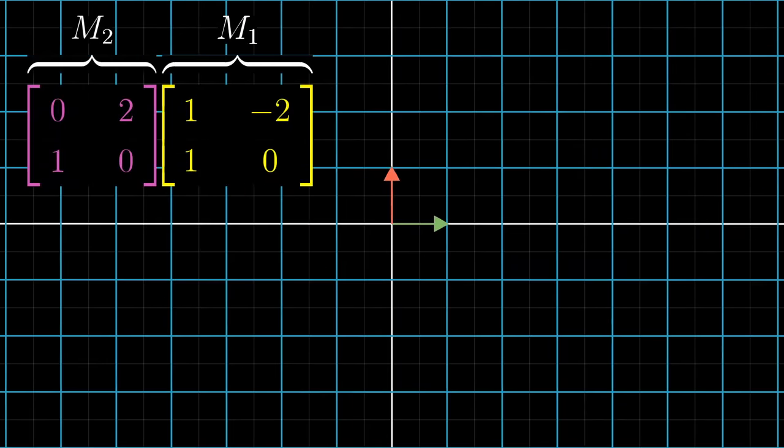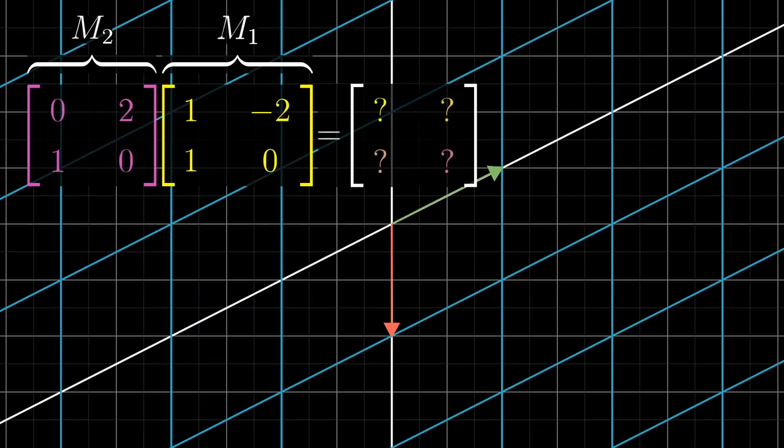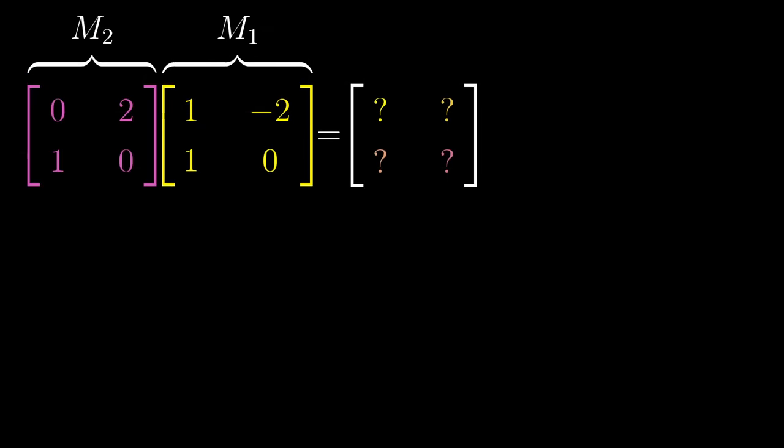The total effect of applying M1 then M2 gives us a new transformation, so let's find its matrix. But this time, let's see if we can do it without watching the animations, and instead just using the numerical entries in each matrix.